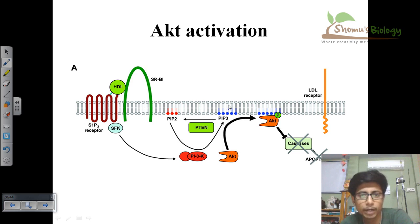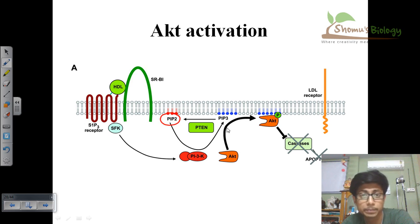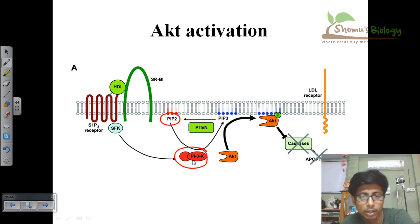Looking at this diagram, this shows how AKT is activated. We can see PIP2 embedded in the membrane. PI3 kinase — which is a protein in the cytosol, not embedded in the membrane — converts PIP2 into PIP3. The PIP3 is then produced and will add a phosphate group to AKT.